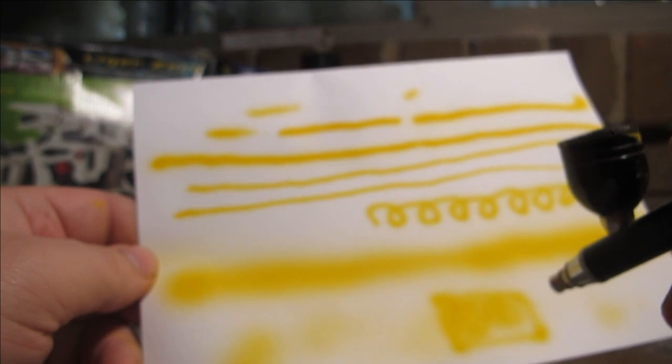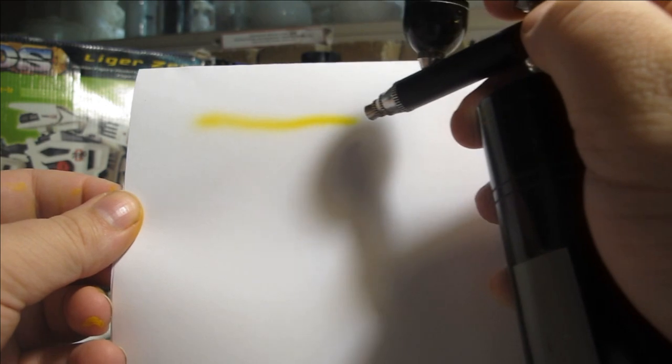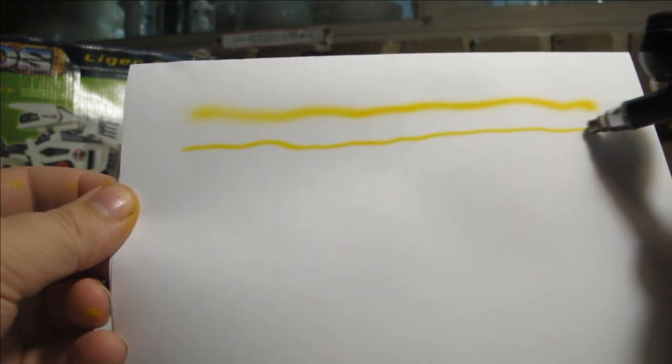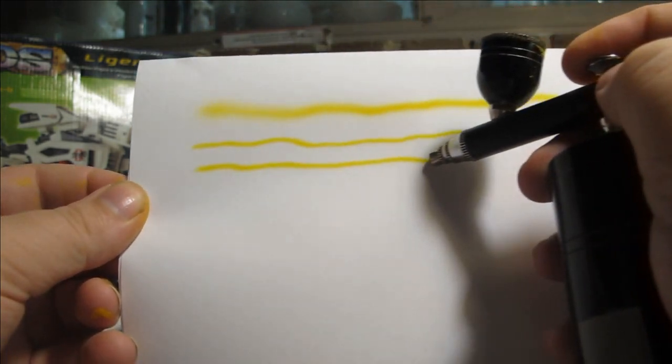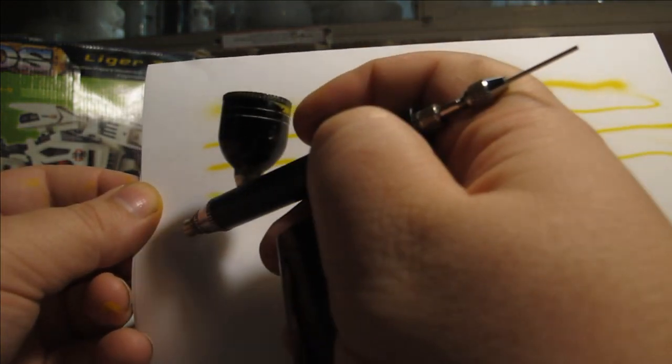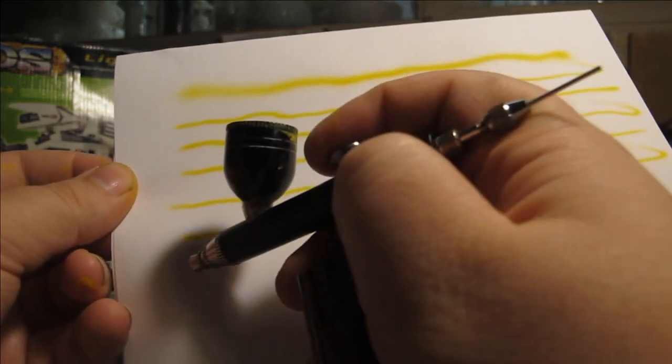On this second page, improving the thinning ratio to two to three parts thinner to one part paint for a much higher viscosity, I was able to get very beautiful and free-flowing lines as thin as I desired and a fair amount of control and excellent gradients.